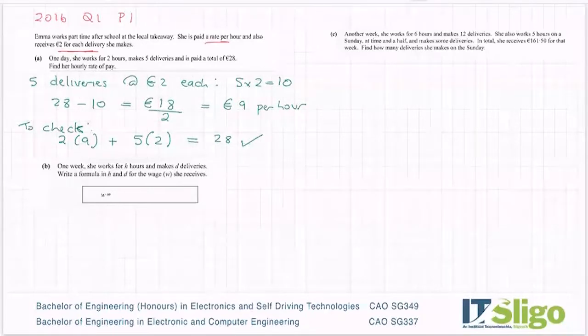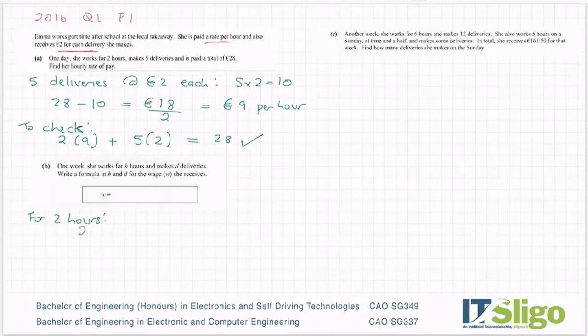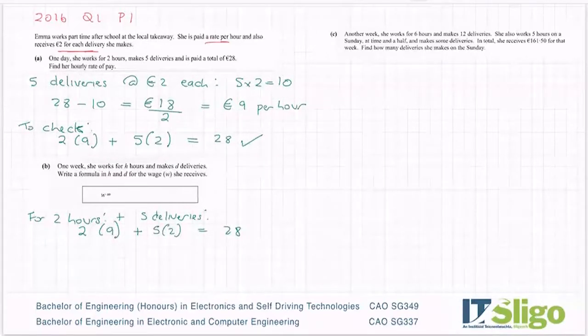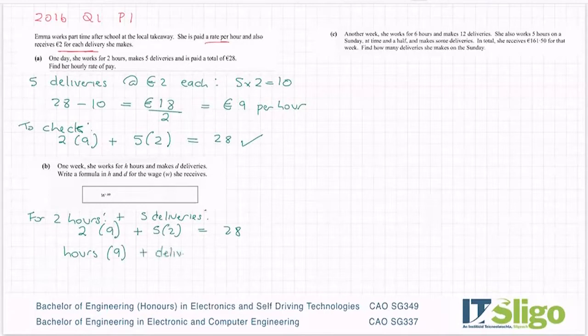Okay, so students generally don't like these. This is how I do them. So for two hours, this is my formula. I have two hours by the nine euros plus—and sorry I'm going to go five deliveries, I forgot that I needed deliveries. So all I'm doing basically is taking the example up here: five times two being equal to my wages. Okay, so then I start to put words on it. So this is my number of hours by the nine euros because it's nine euros per hour, plus this is the deliveries by two is equal to my wages.